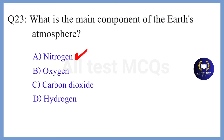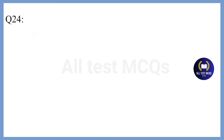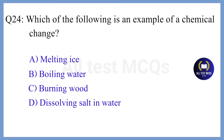Question 24. Which of the following is an example of a chemical change? The correct answer is Option C. Burning wood.